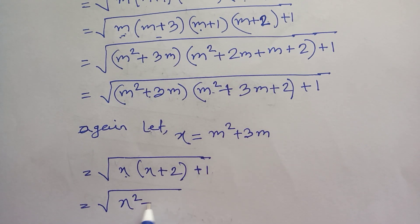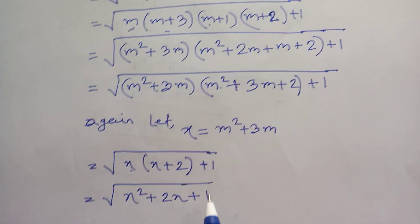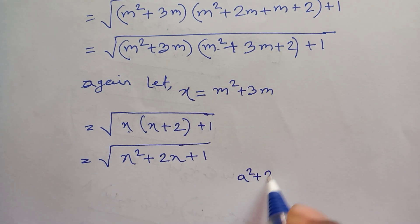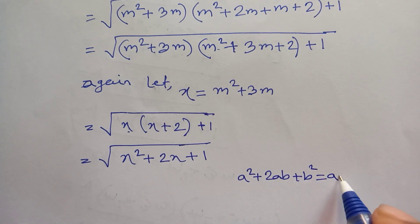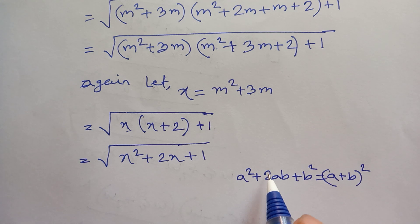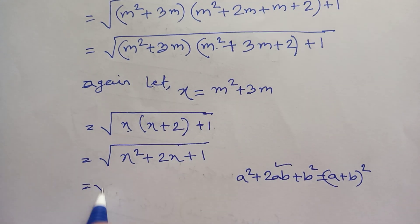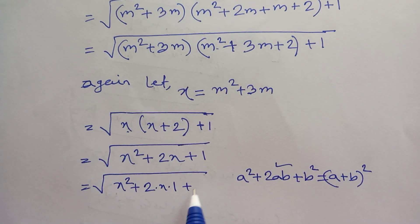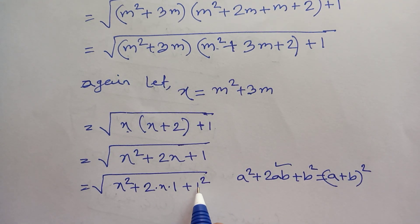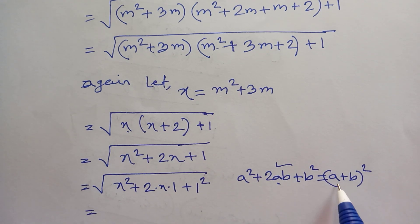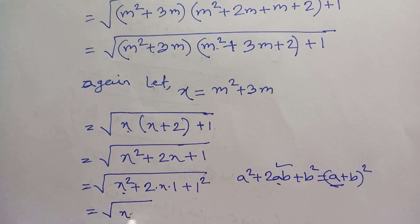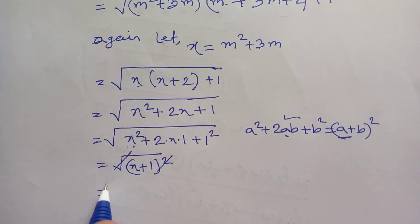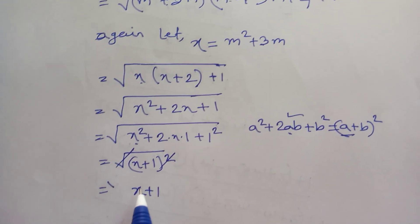We know the identity a²+2ab+b² equals (a+b)². Applying this: x²+2·x·1+1² equals (x+1)². So the square root cancels the square, giving us simply x+1.